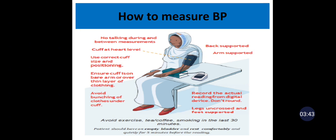The patient should have an empty bladder and rest comfortably and quietly for 5 minutes before measurement. Avoid exercise, caffeinated drinks such as tea and coffee, smoking, and adrenaline drugs in the last 30 minutes before measurement. The back and arm should be supported, legs should be uncrossed and feet supported, no talking during measurements, and the arm should be bare with the cuff at the level of the heart.